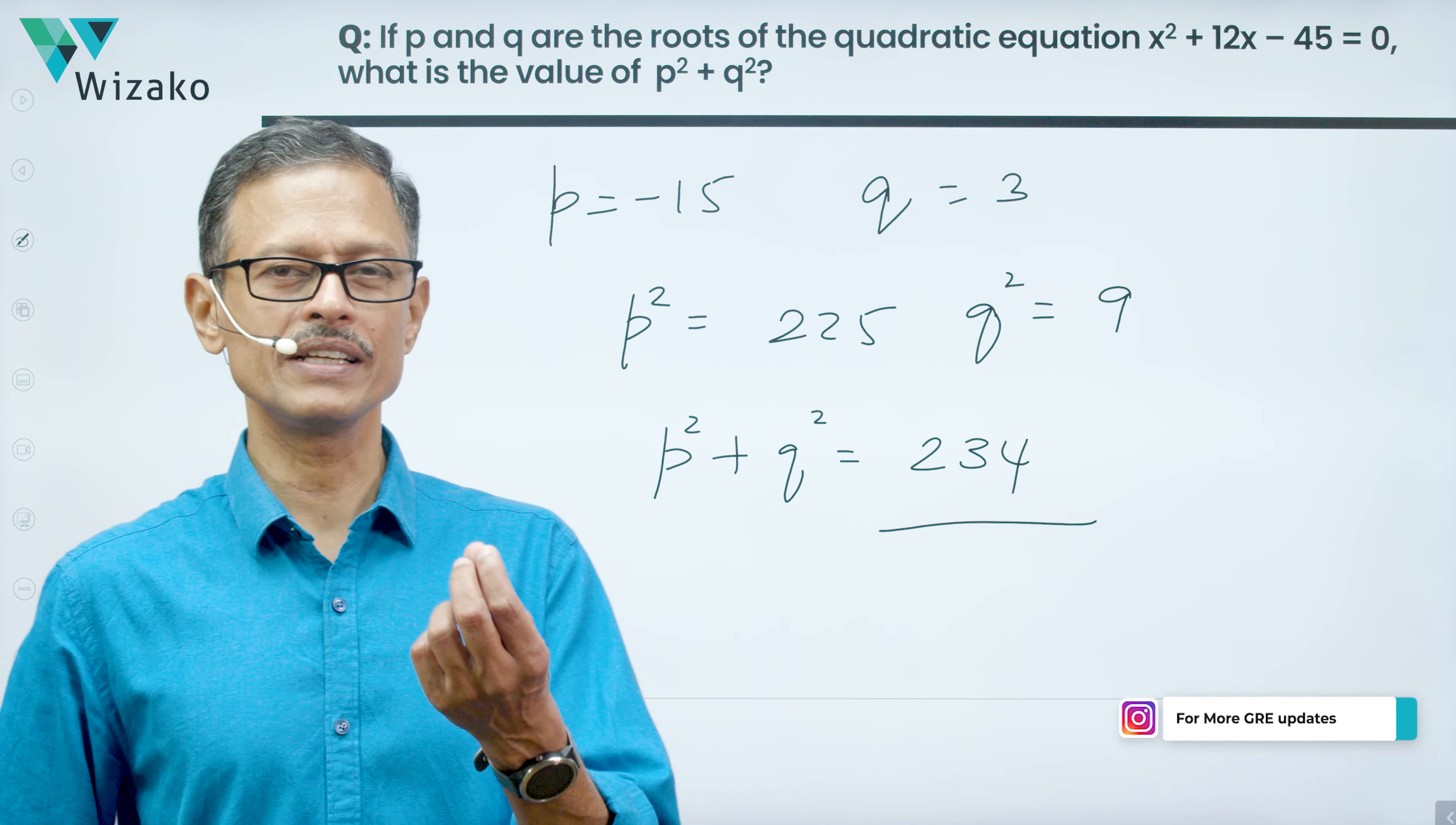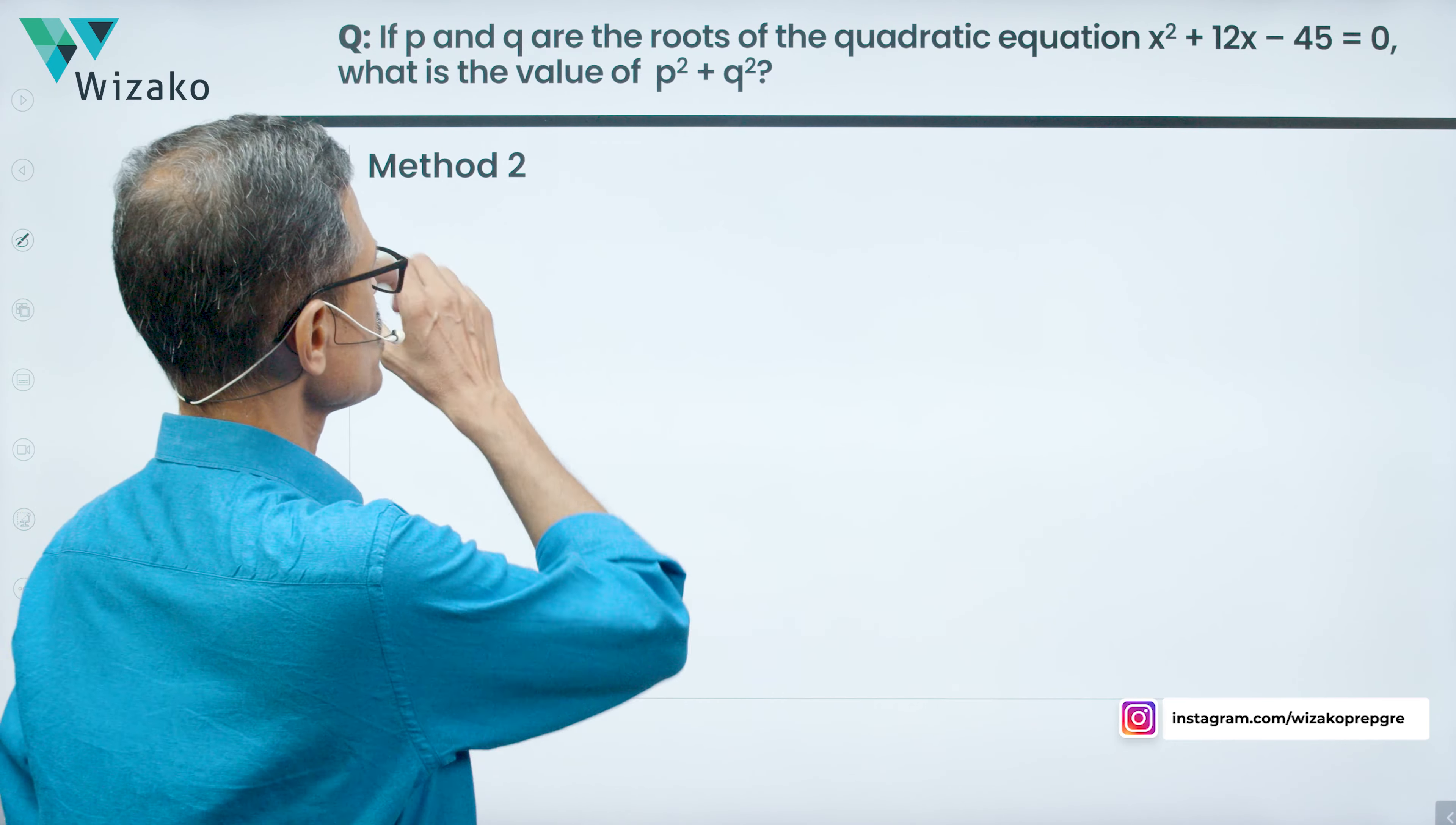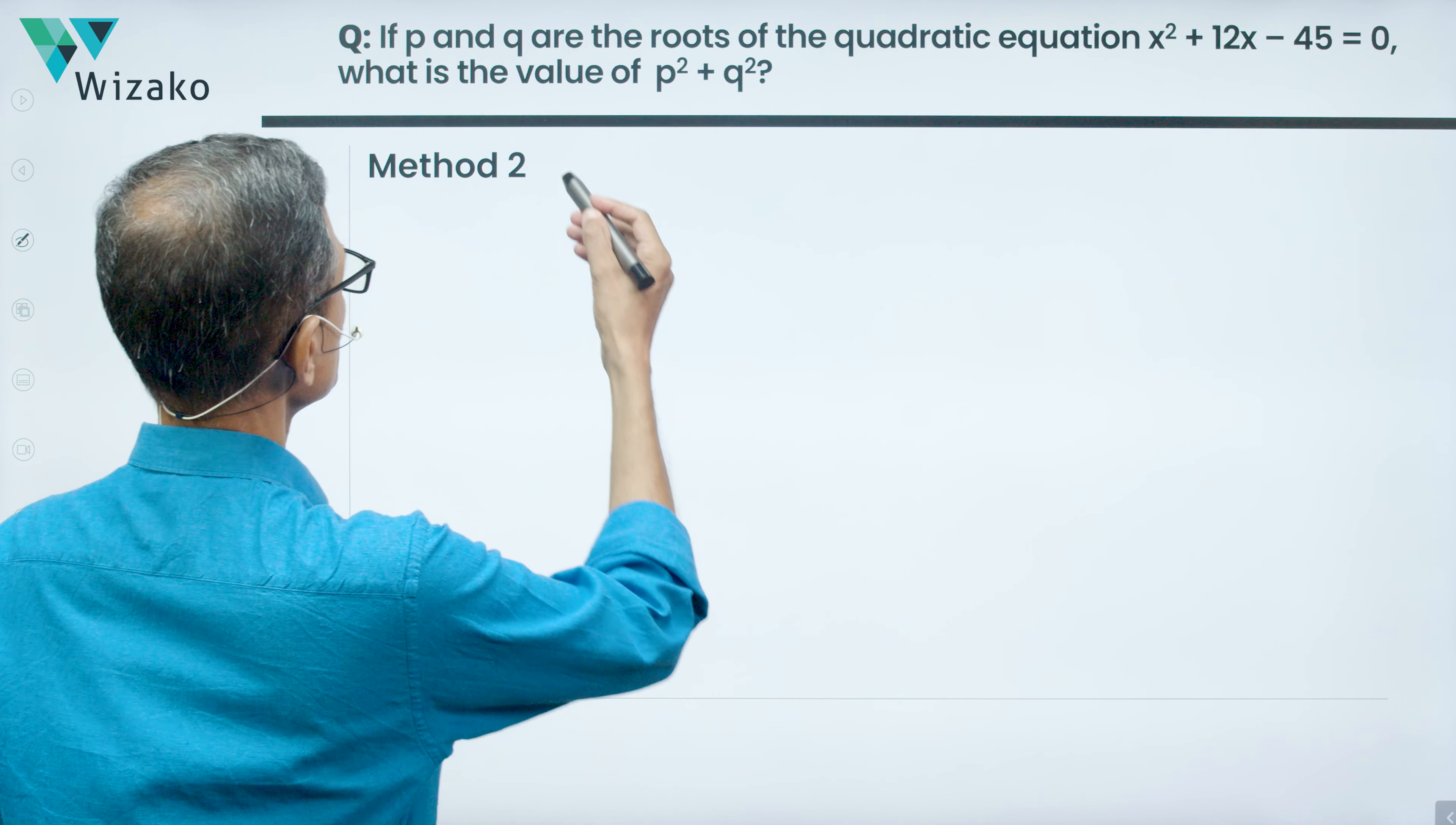It doesn't take more than probably 30, 35 seconds to arrive at the answer if you know how to factorize this quadratic equation. The second method I like to walk you through, and I'll also tell you why the second method is also an important one to learn. We'll finish the second method. So what do we know?